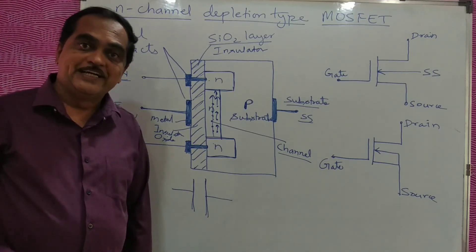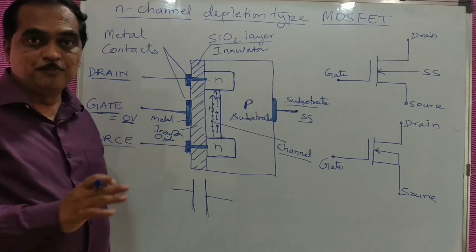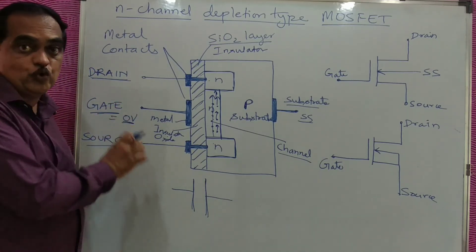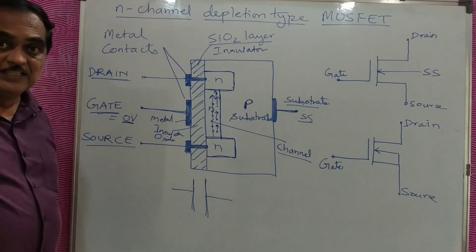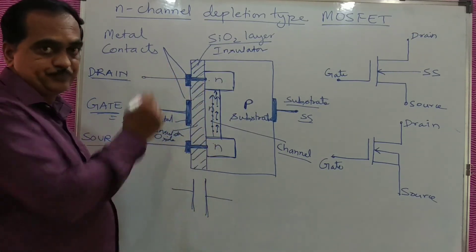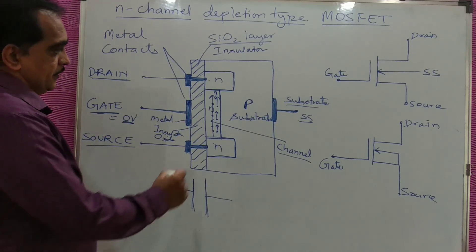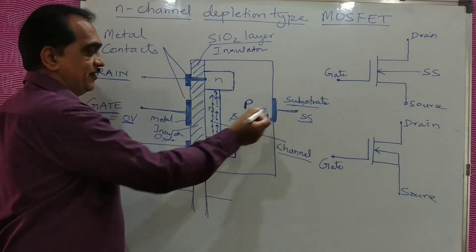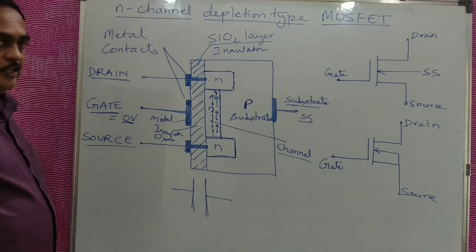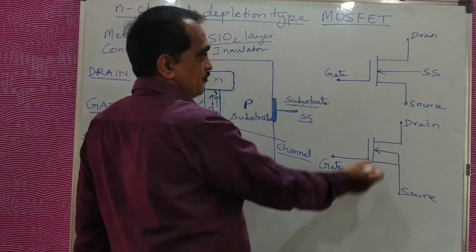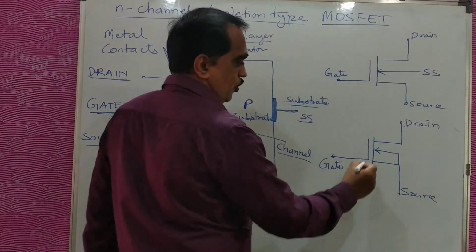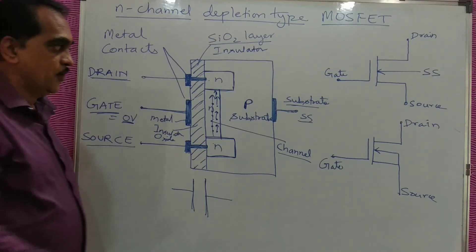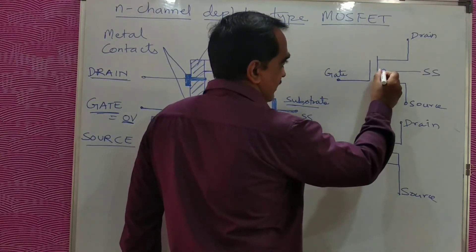That means normally it is on — this depletion type MOSFET is normally on. When Vgs is zero, when the voltage between gate and source is zero, this current is going to flow. This substrate terminal is the fourth terminal, which will be internally connected to the source, or it can be left as a fourth terminal. These are the symbols of N-channel depletion type MOSFET, where the conventional current arrow is shown inside.